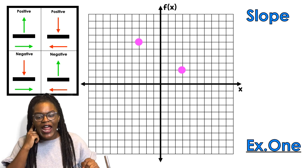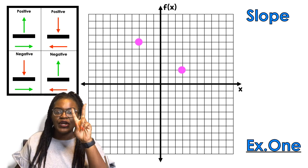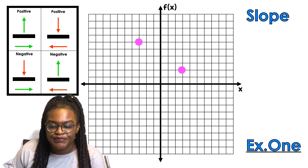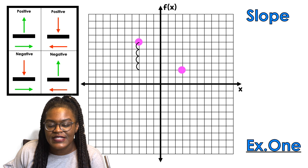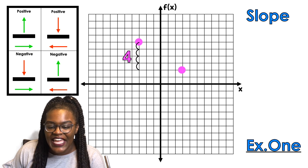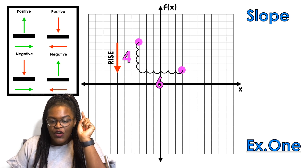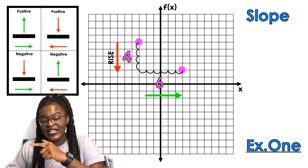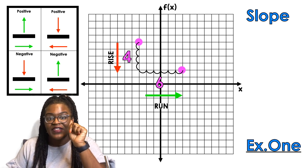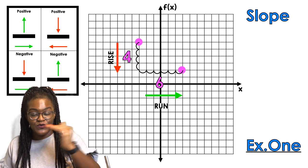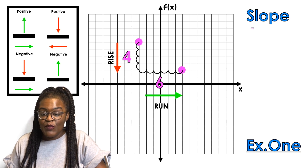I have two points on the graph — point one and point two. We're going to count our rise, which is up and down. From point one, I bounced one, two, three, four spaces and I went down. Then I'm going to run over — I ran over one, two, three, four, five, six spaces and I went to the right. Right is positive, so that's a green arrow. The rise went down, so that's a negative red arrow.